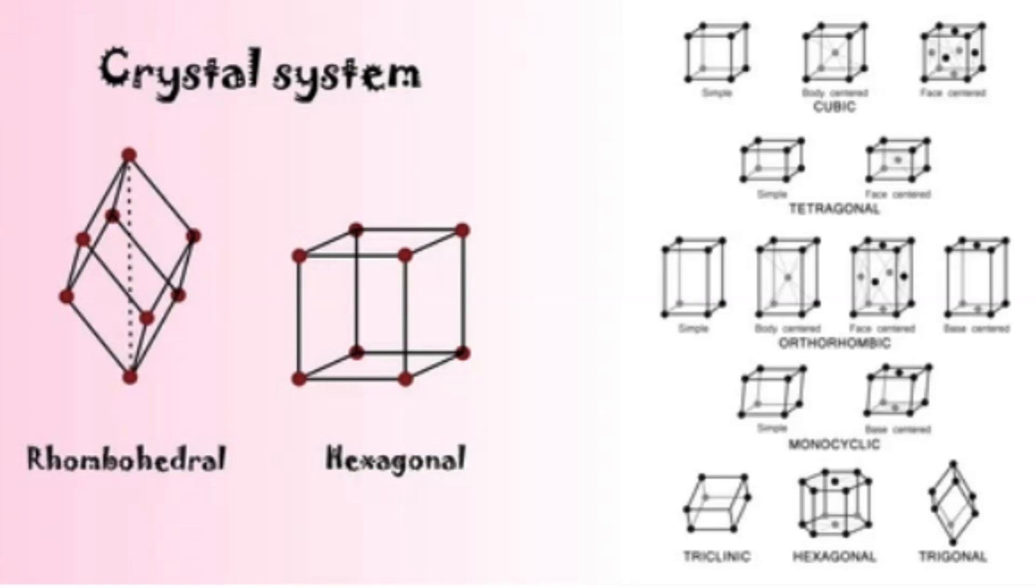Orthorhombic system. The three axes in this system are all of different lengths and intersect at right angles. Minerals in this system can exhibit rectangular, prism-like forms. Topaz and sulfur are representative minerals of the orthorhombic system.